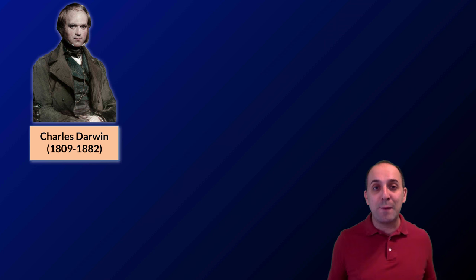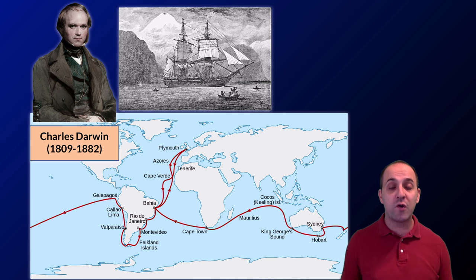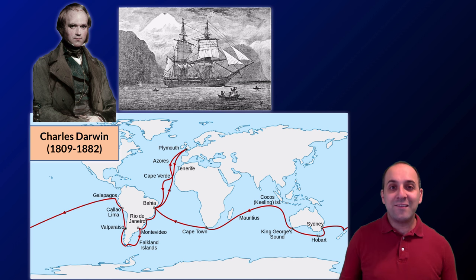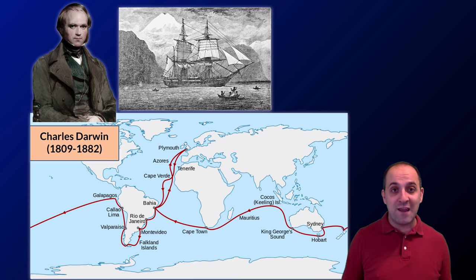Darwin always had an aptitude for the natural sciences, and the opportunity came along for him to become the ship's naturalist on board the HMS Beagle, which was going on a trip around the world. This voyage took something like five years. As the ship's naturalist, Darwin was responsible for collecting specimens of the different organisms he found as the ship traveled from place to place. He had a lot of time to collect a lot of data and then to think about what that data meant.